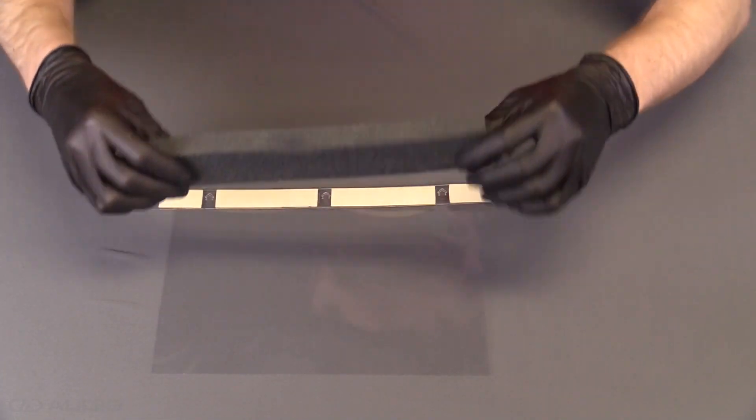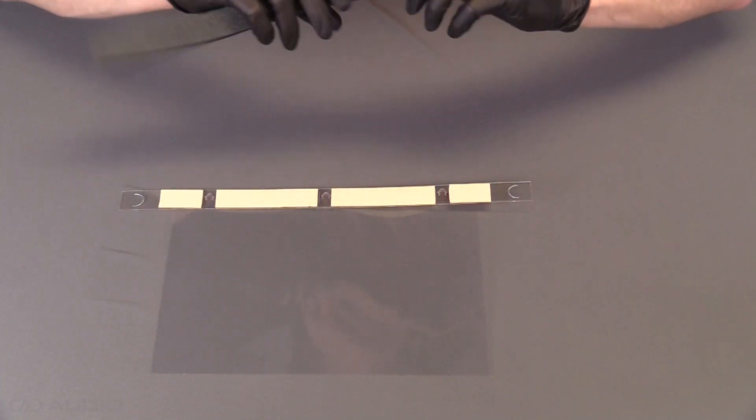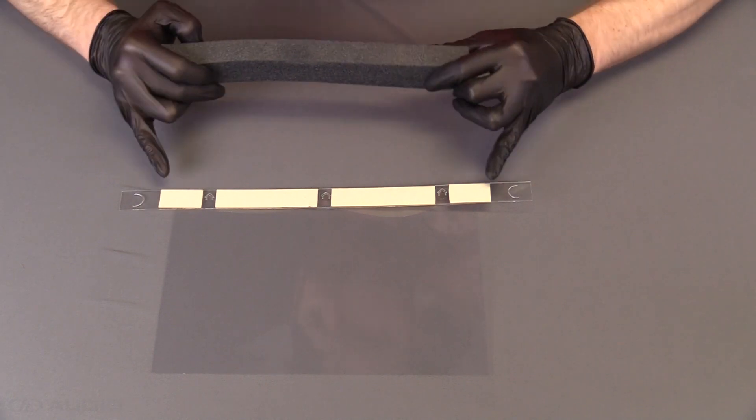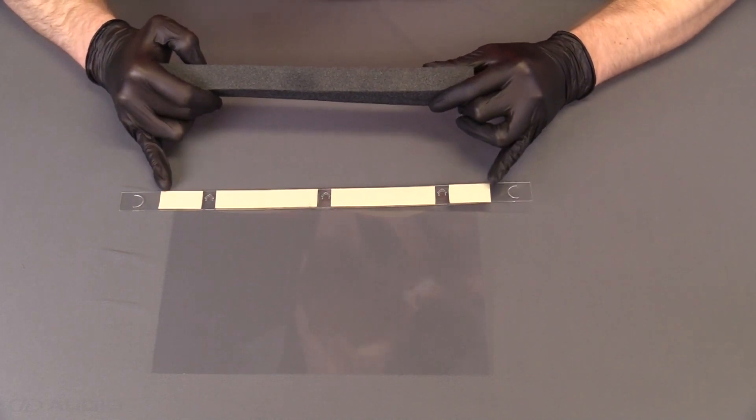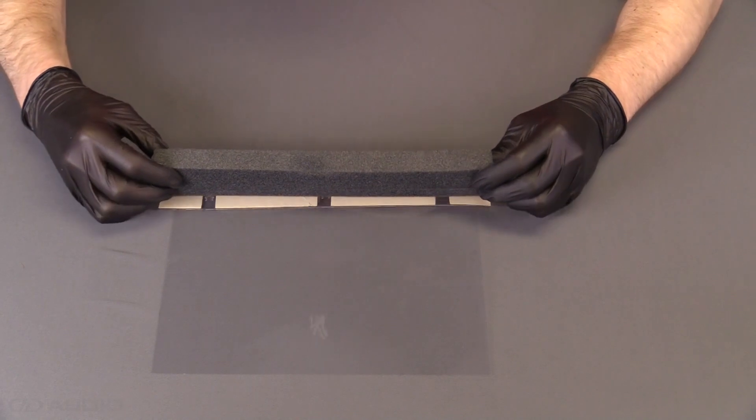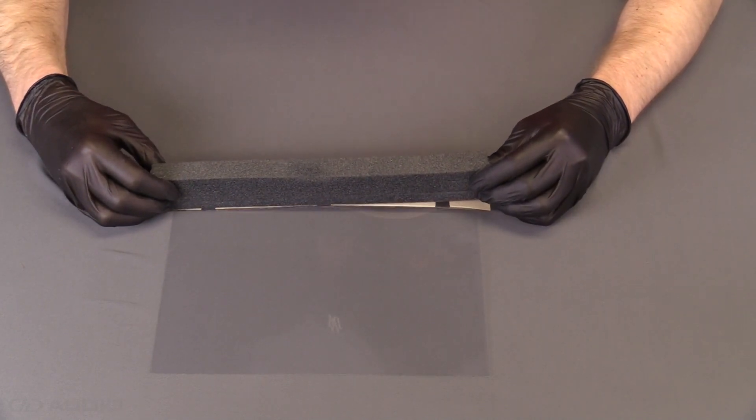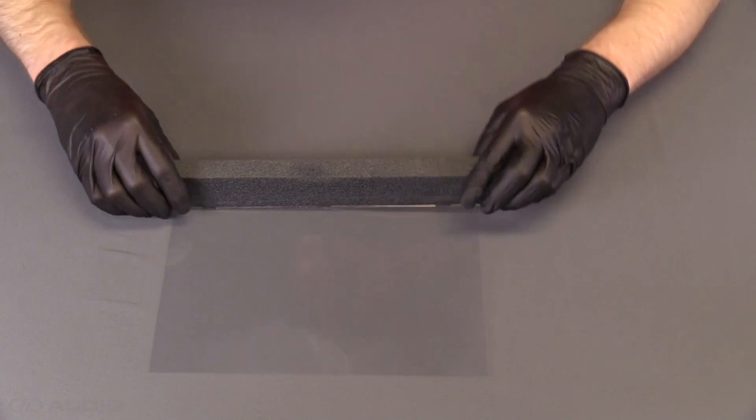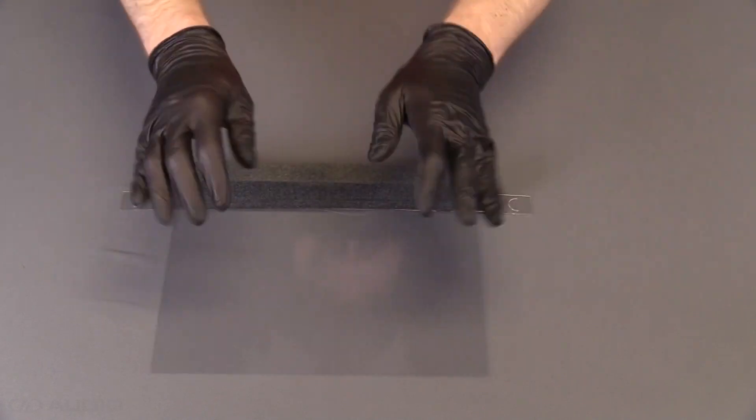We're going to line up our foam with our tape. The outermost tape marks is basically what the foam should line up with. So line up both sides and give it a nice press.